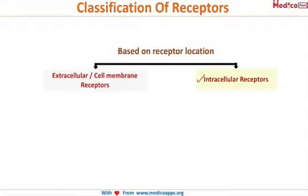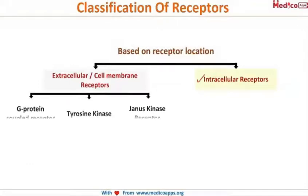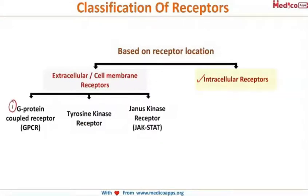Coming to extracellular, there are three important types. The first one is G protein coupled receptor, that is GPCR. Next, tyrosine kinase receptor. The third one is Janus kinase receptor, also known as JAK-STAT receptor.